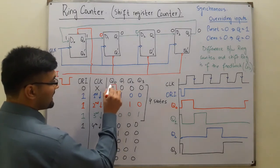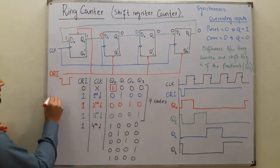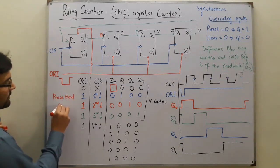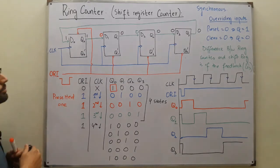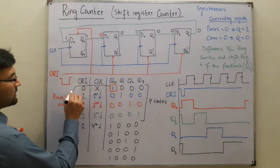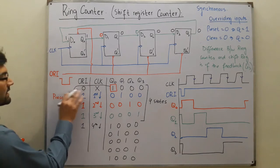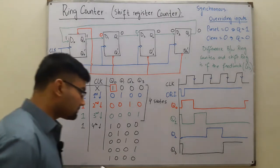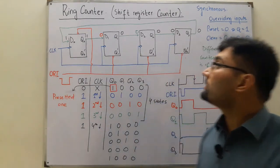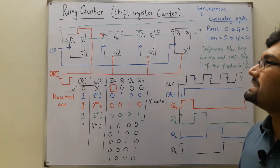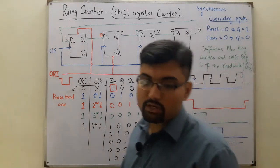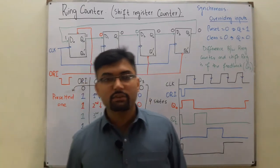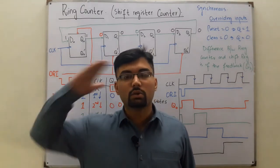The initial '1' at Q0 is called a pre-setted one — it is 1 because of the preset input. If the preset input is not applied, this would not be 1. That's all about the ring counter. In the next video we see Johnson's counter. If you have any questions, feel free to ask in the comment section. Do subscribe to the channel. Take care of yourself and everyone around you. Goodbye.